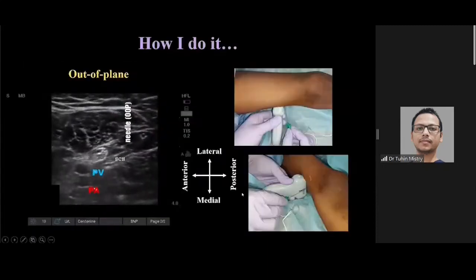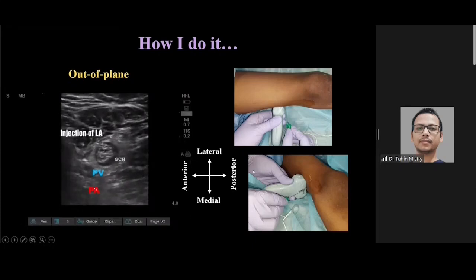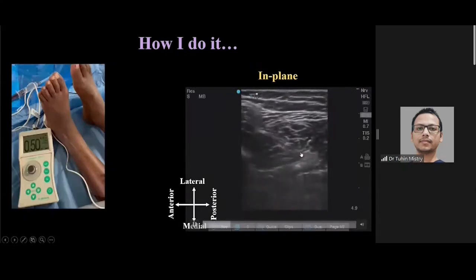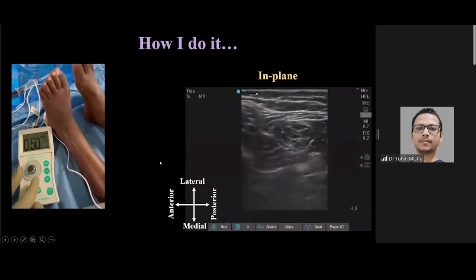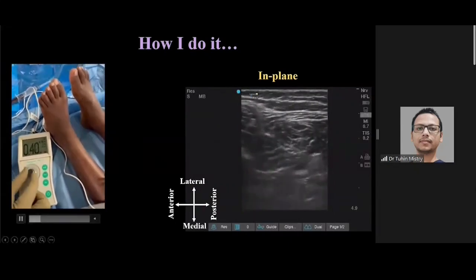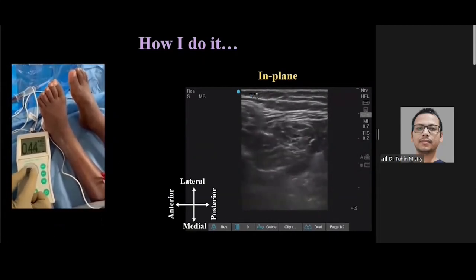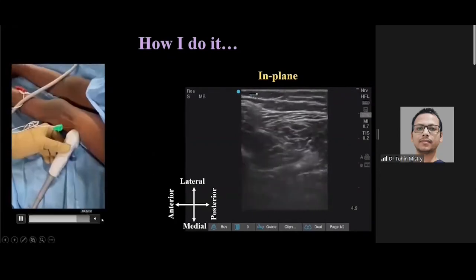In the out-of-plane technique, the needle is inserted from lateral to medial direction and the drug is deposited. In the in-plane technique, the needle is inserted from anterolateral to posteromedial direction and placed at the sweet spot where divergence is happening. If using a peripheral nerve stimulator, obtain inversion or plantar flexion response at 0.5 mA, decrease to 0.2 mA to check for intraneural injection, and then deposit the drug once confirmed safe.